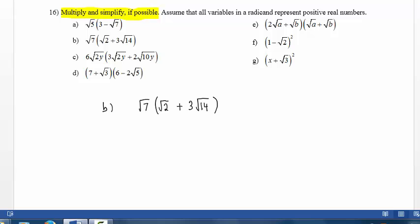In part B, we proceed the same way as part A. The square root of 7 times the square root of 2 is the square root of 14. Positive times positive is positive. We have the square root of 7 times 3 times the square root of 14, so we write 3 times the square root of 7 times 14, which is the square root of 98.